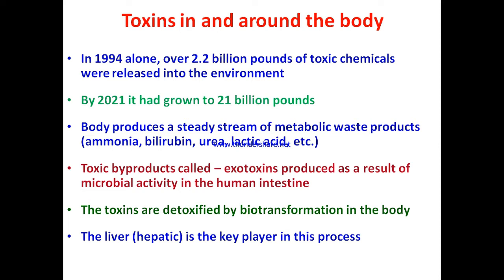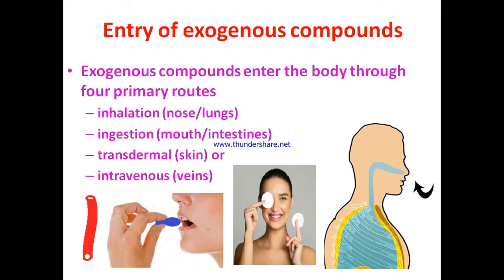Exotoxins are produced as a result of microbial activity in the human intestine. The toxins are detoxified by biotransformation in the body. Most of the biotransformation takes place in the liver. Exogenous compounds enter the body through four primary routes: inhalation during breathing through the nose and lungs, and by ingestion through the mouth and intestine.